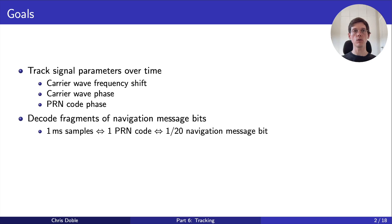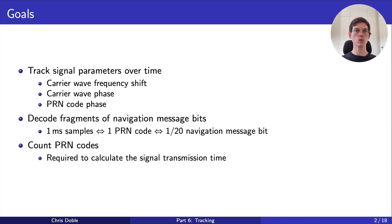The third and final goal is to count the number of PRN codes we've observed. This is required to calculate the signal transmission time, which we'll talk about later. Usually we only observe one PRN code per millisecond, but this can change due to frequency shifts. For specifics, check out the tracker class in my GPS receiver implementation on GitHub — I've left a link in the description.